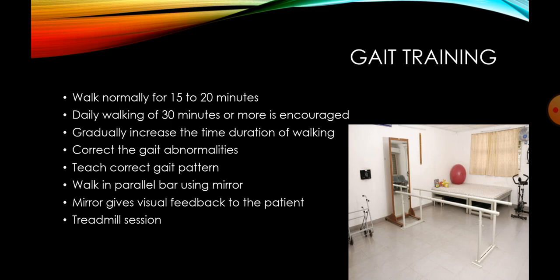Next is gait training. Walk normally for 15 to 20 minutes. Daily walking of 30 minutes or more is encouraged. Gradually increase the time duration of walking. Correct the gait abnormalities and teach the correct gait pattern. Walk in parallel bars using the mirror — when we ask the patient to walk in the parallel bar, the patient can have visual feedback, see their mistakes in the mirror and correct them. If a treadmill is available in the OPD, we can ask the patient to walk on it.